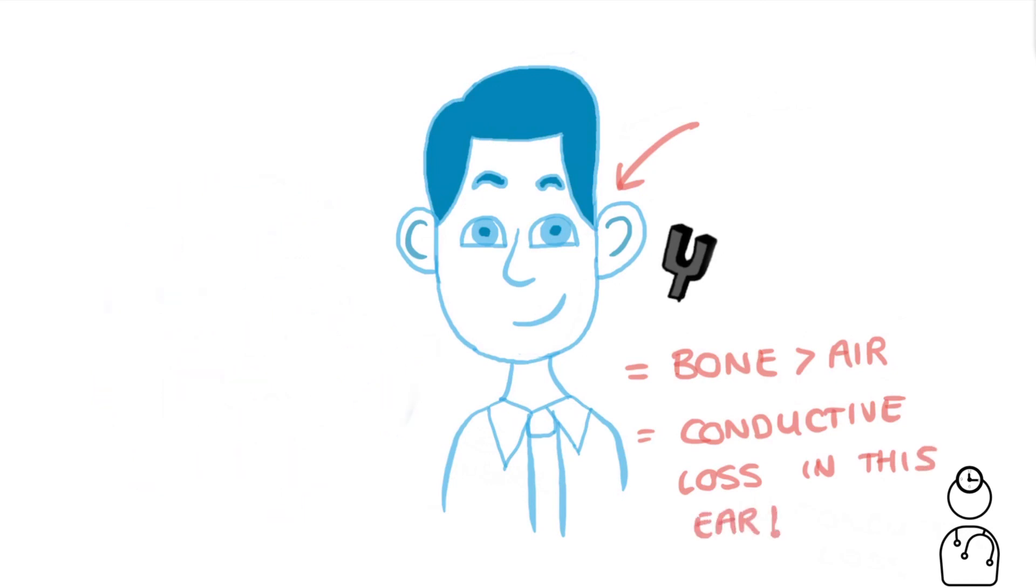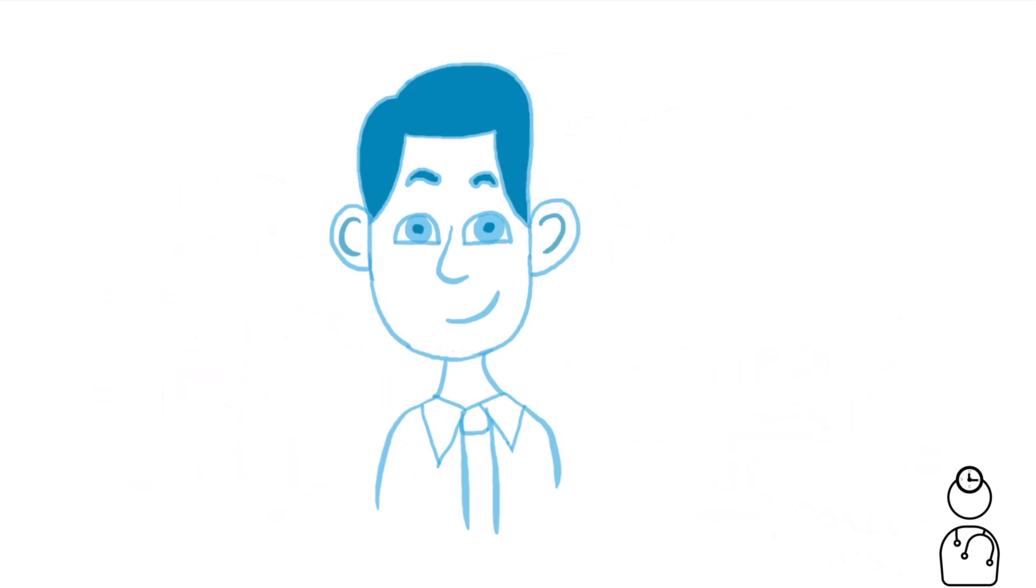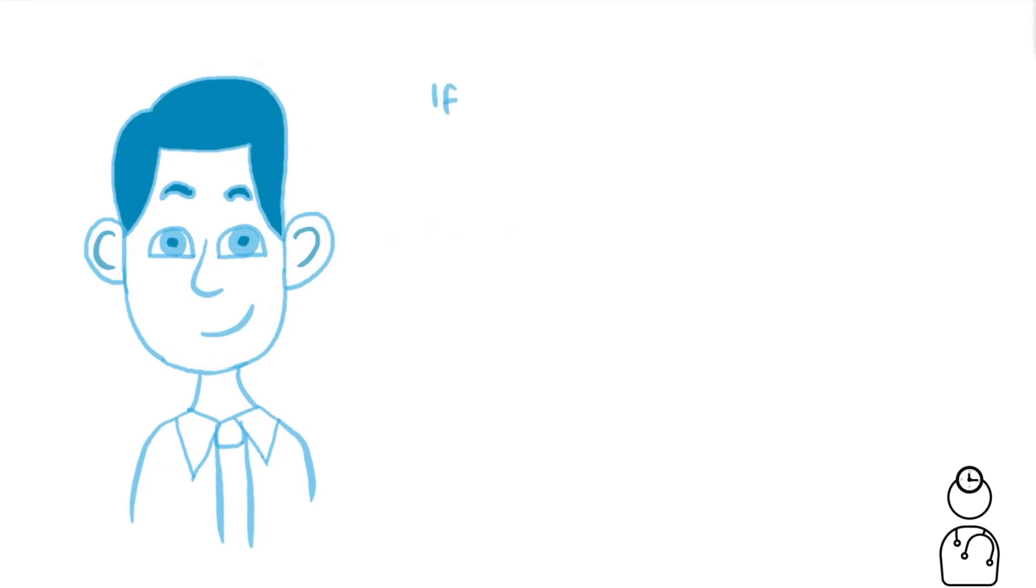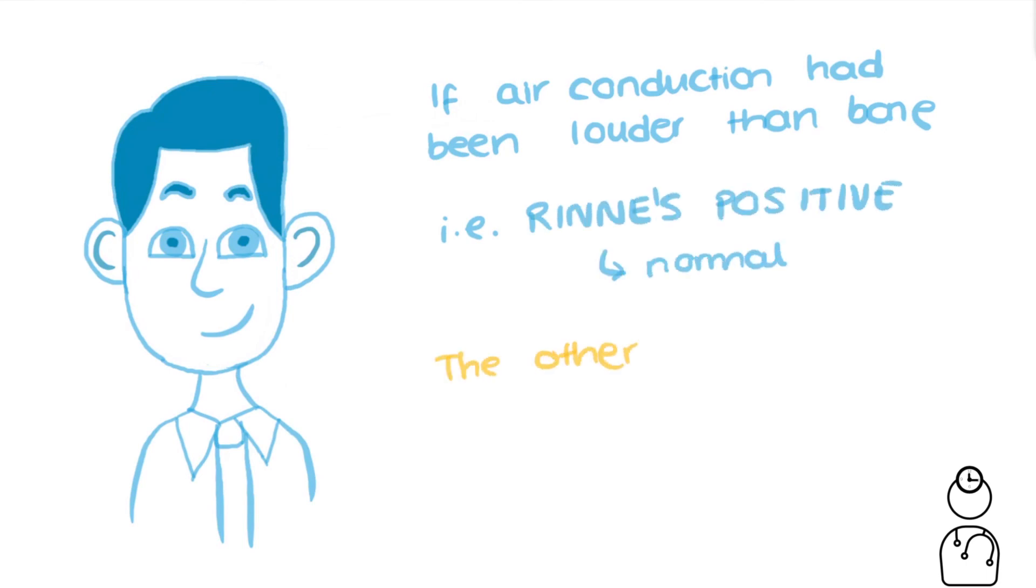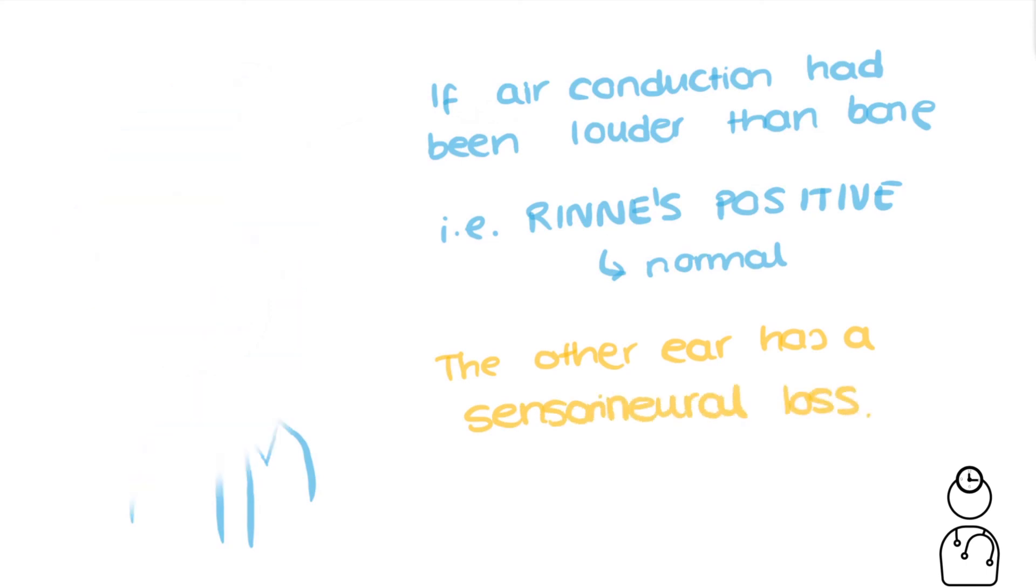We'd also repeat Rinne's on the other side to check it's normal. If Bob had had a normal Rinne's test, also known as a positive Rinne's test, where the air conduction is better than bone conduction, it would mean that the other ear has a sensorineural hearing loss.